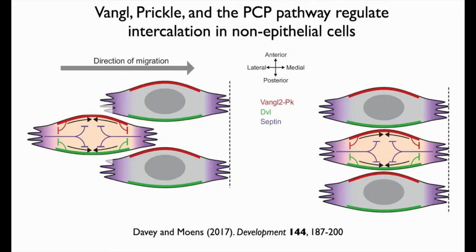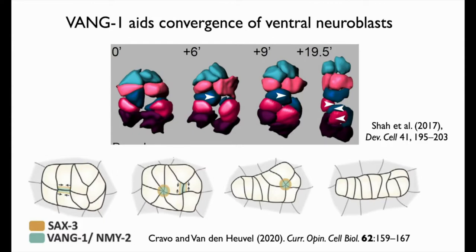Some components are conserved, including the VANGL homolog VANG-1. Antonio Colavita's lab showed that VANG-1 is required for what appears to be a convergent extension-like movement of ventral neuroblasts in the worm embryo, published in collaboration with Zhurong Bao's lab in Developmental Cell. First author Pavak Shah did beautiful imaging showing these neuroblasts undergo a convergent extension-like movement, with VANG-1, non-muscle myosin NMY-2, and the roundabout axon guidance receptor SAX-3 involved in neighbor exchange.